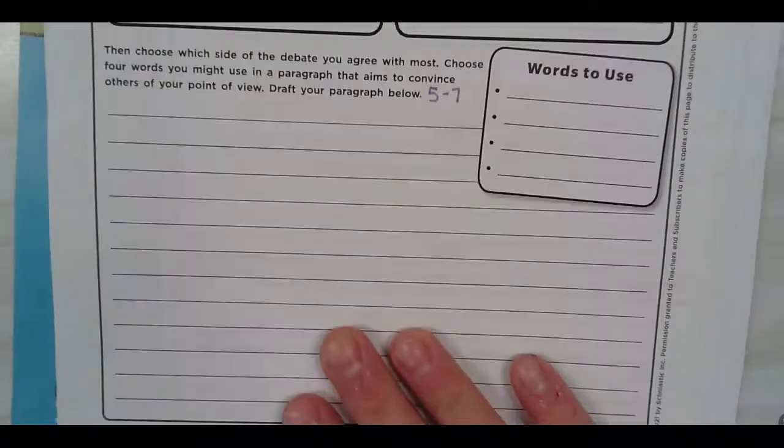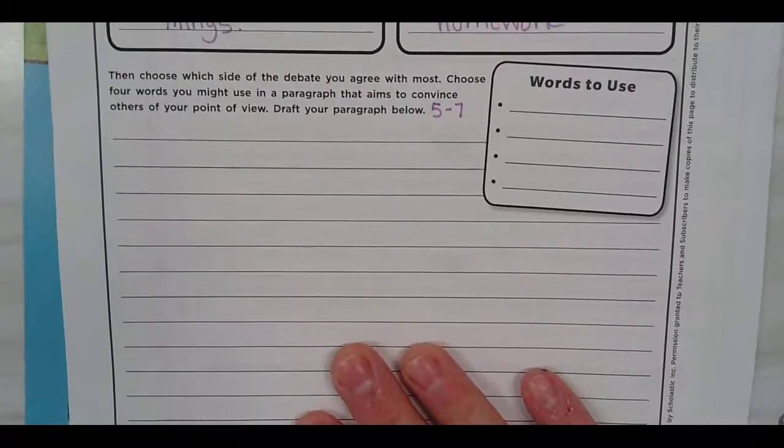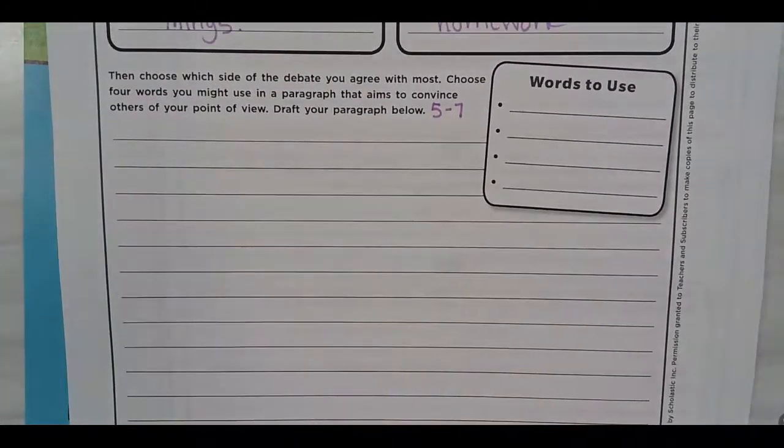Now what you are going to do is choose which side of the debate you agree with most. You are going to choose four words you might use in a paragraph that aims to convince others of your point of view. Draft your paragraph below. You are going to use five to seven sentences.